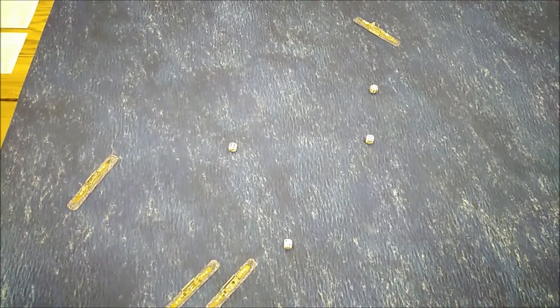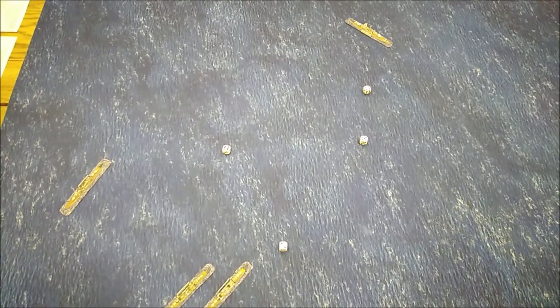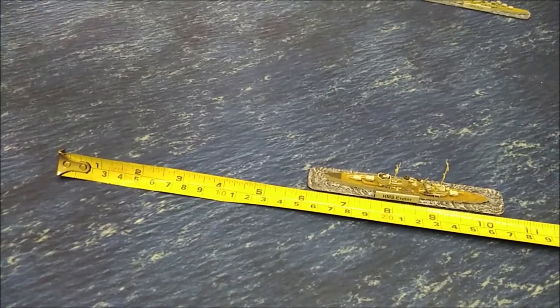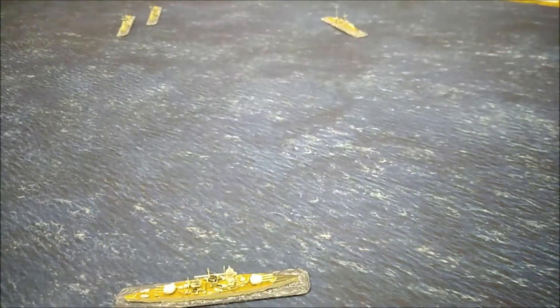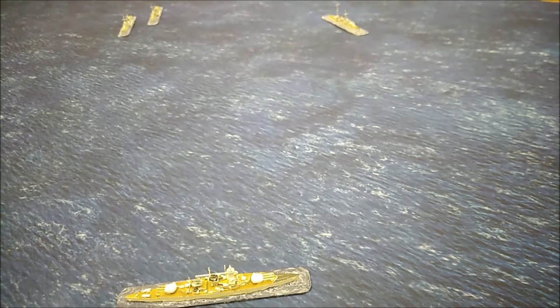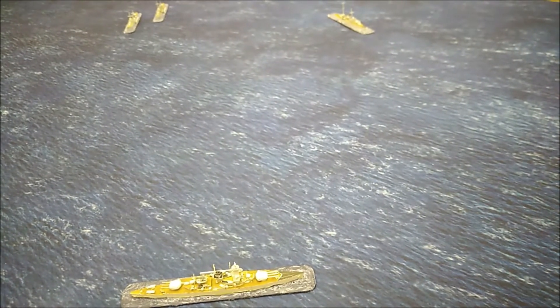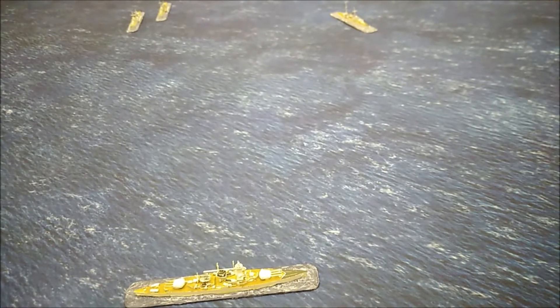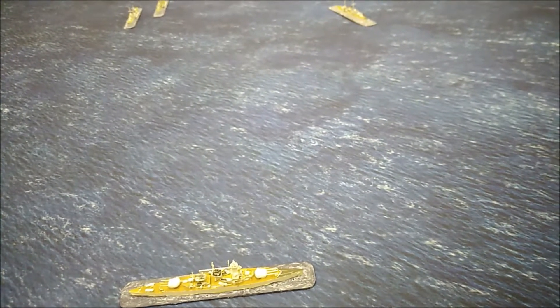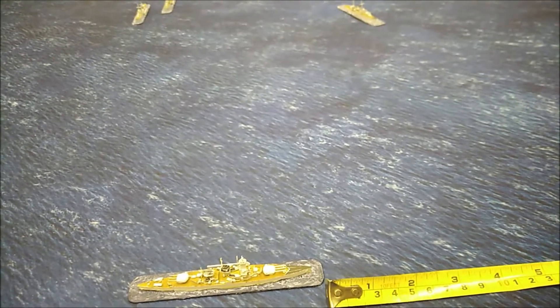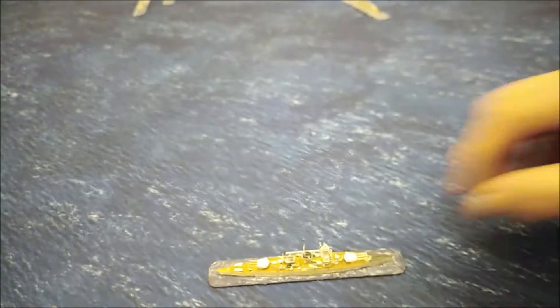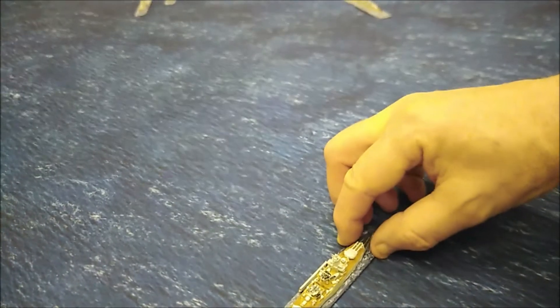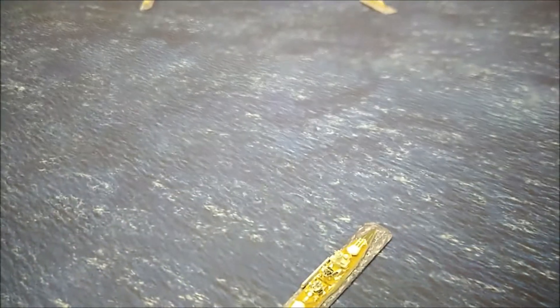So one British ship has to move first, then the Graf Spee, and then the final two British ships. We're going to carry on very much in the same vein, and the Exeter's going to move six. And for the purposes of this demonstration, we're going to have the Graf Spee close a bit to try to deliver a devastating broadside to the Exeter before she makes her escape. So she is going to go forward compulsory two, turn 45 degrees, and then go forward four.